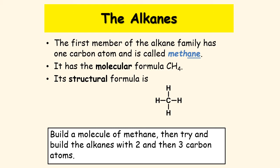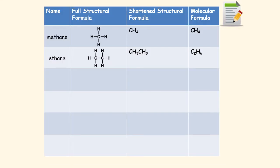You draw all the hydrogens at 90 degrees to one another, and hopefully in class you'll be able to build a model of methane and then extend the chain to ones that contain two or three carbons. The second one in the series with two carbons is ethane. You draw the two carbons first in a chain and then fill in the hydrogens until each carbon has four bonds. It has a molecular formula of C₂H₆.